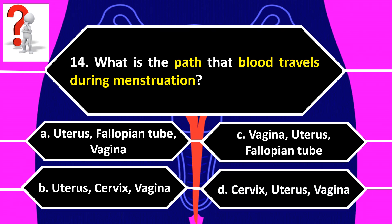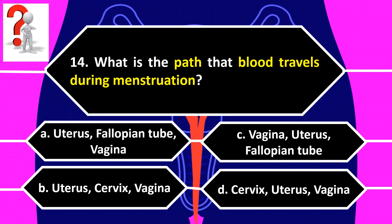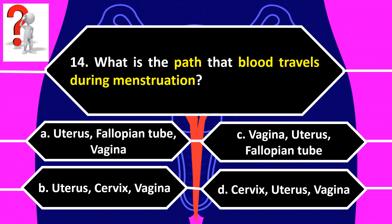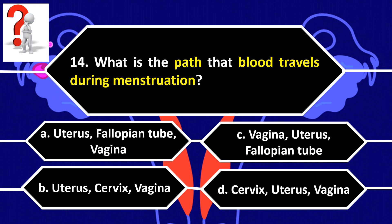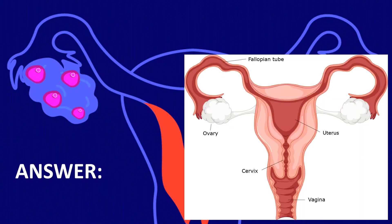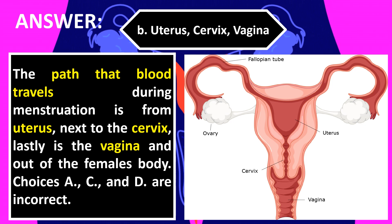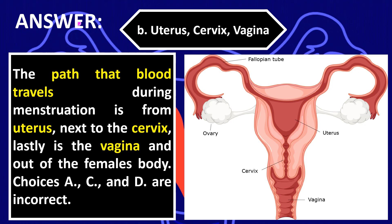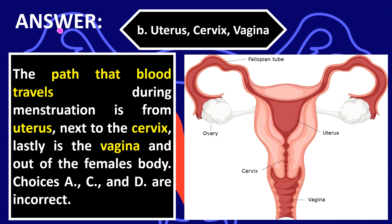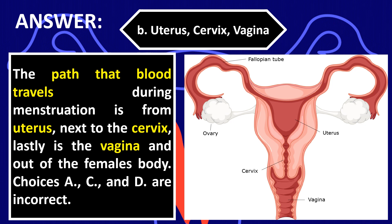Number 14. What is the path that blood travels during menstruation? A. Uterus, fallopian tube, vagina. B. Uterus, cervix, vagina. C. Vagina, uterus, fallopian tube. D. Cervix, uterus, vagina. The correct answer is letter B: uterus, cervix, vagina. The path that blood travels during menstruation is from the uterus, next to the cervix, lastly the vagina, and out of the female's body. Choices A, C, and D are incorrect.